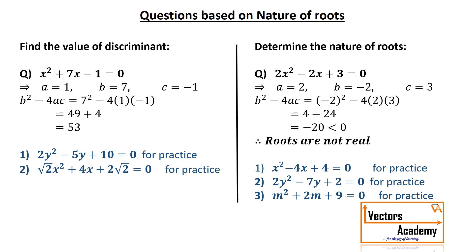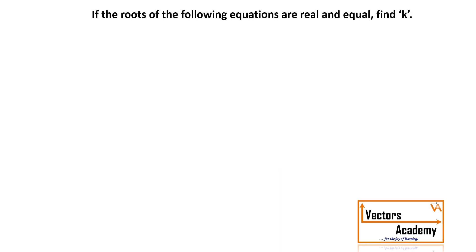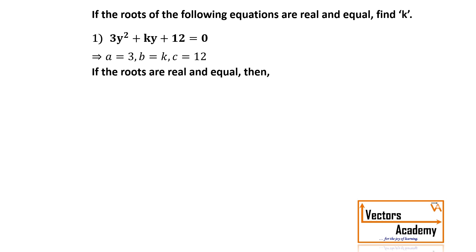The next type of question states that the roots of the equation are real and equal, and asks us to find the value of k. From the table, roots are real and equal when the discriminant equals 0. We identify the coefficients: a = 3, b = k, c = 12. Since the roots are real and equal, b² − 4ac must equal 0. We substitute the values of a, b, and c and simplify to get the value of k.